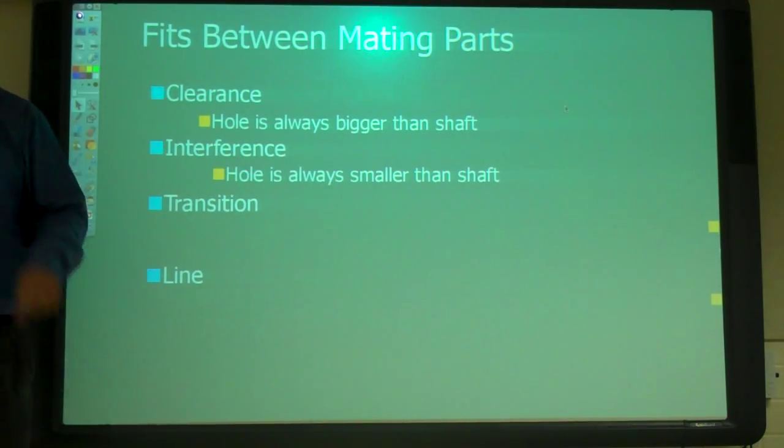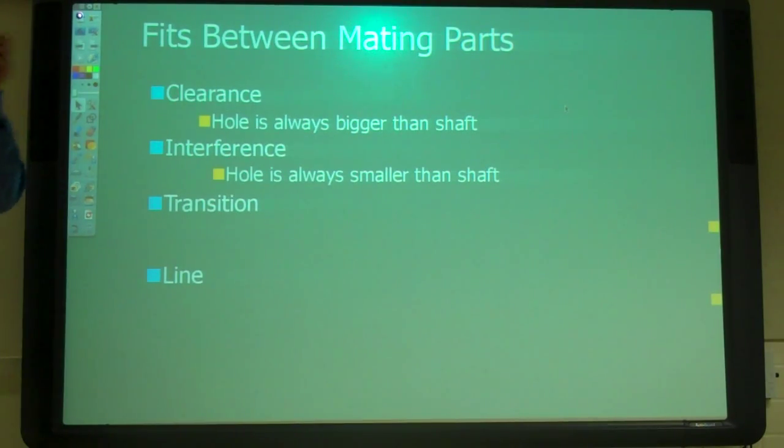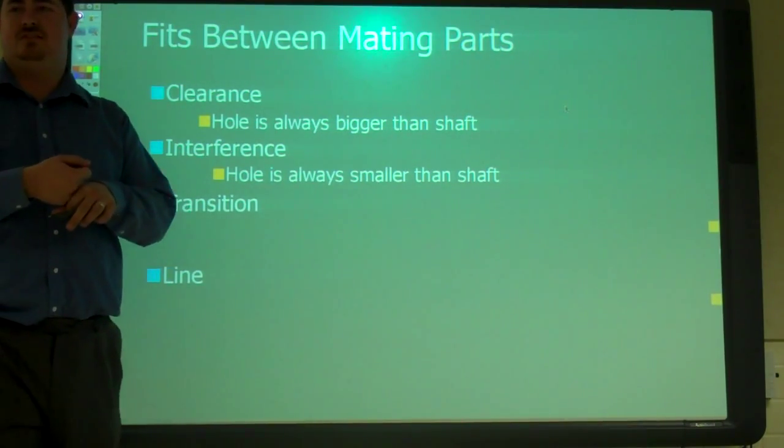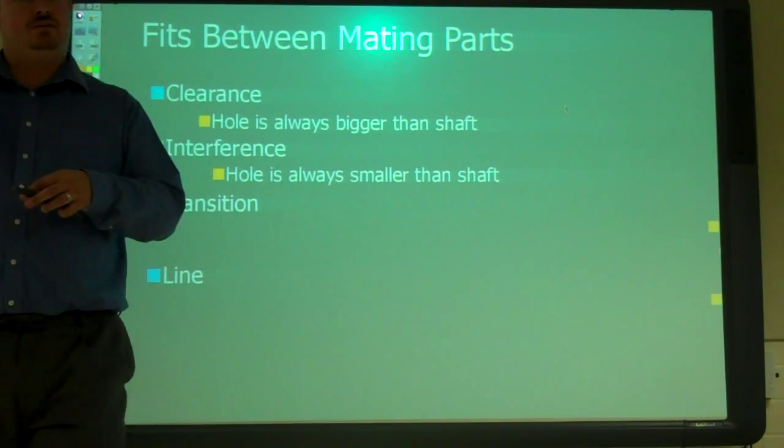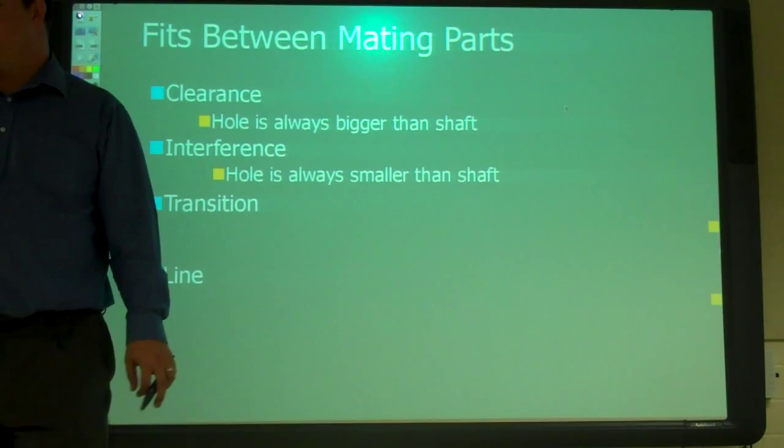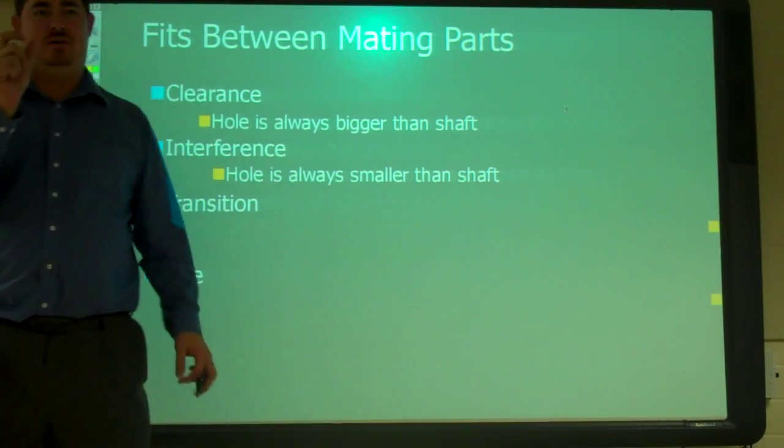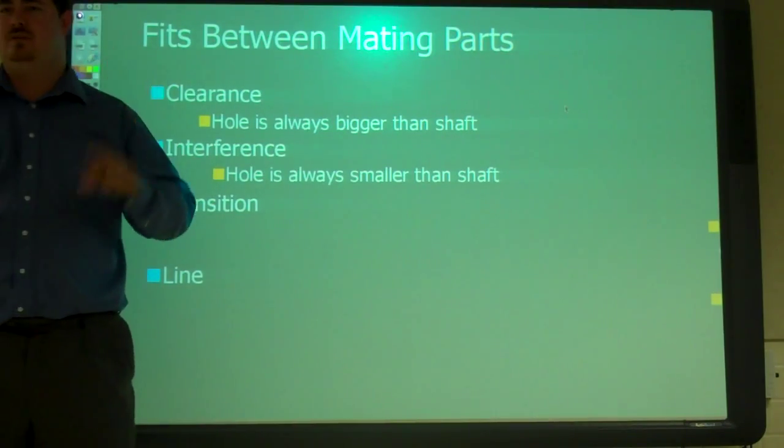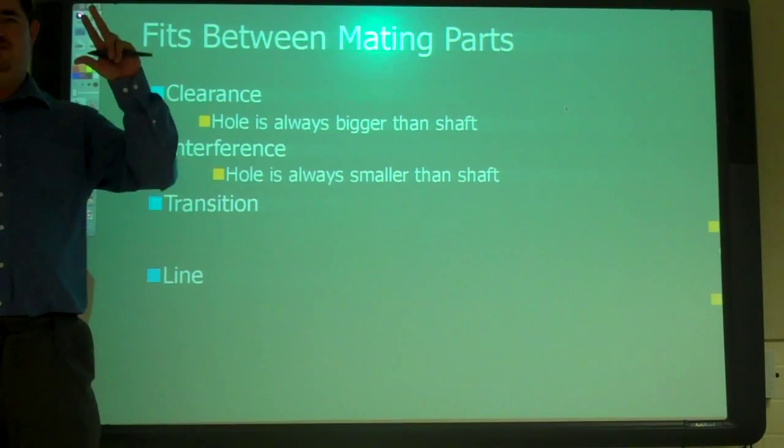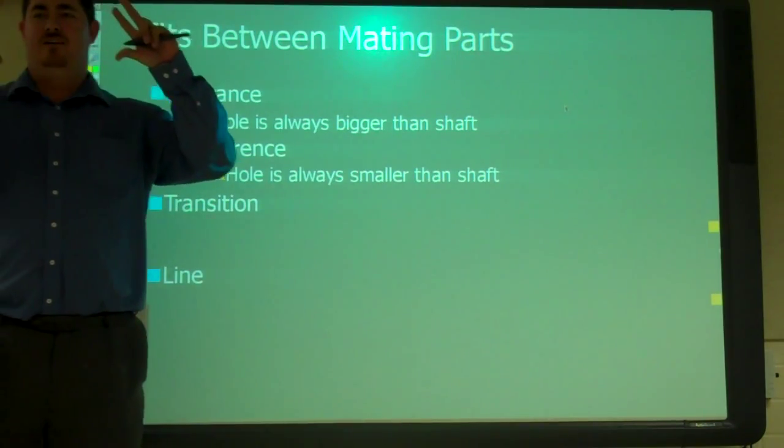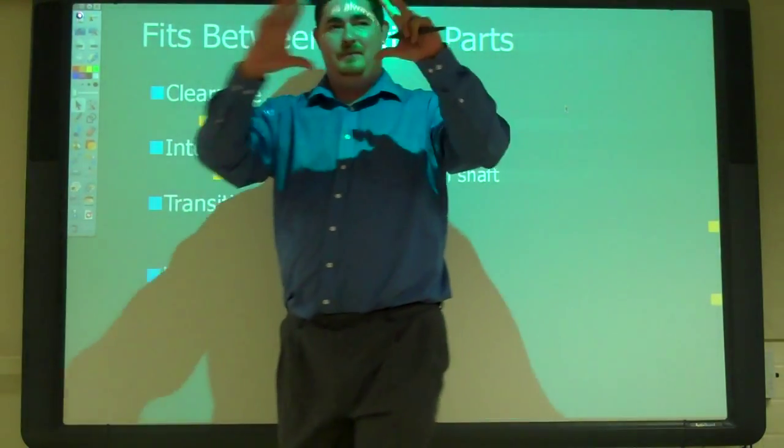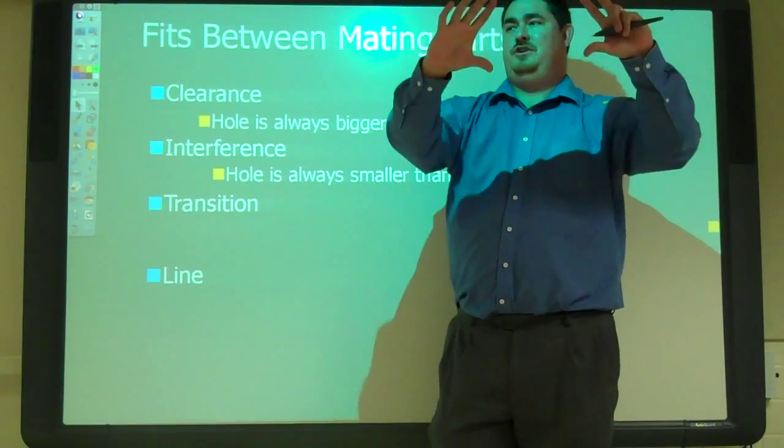Or you heat the hole up so it expands and you cool down the shaft so it shrinks and you put them together and then you return to normal temperature and they're locked together. Or you just press them together depending on how much the interference is. If the interference is only a couple thousandths you can press them together or if it's only a couple ten thousandths so we're out in the fourth or fifth decimal place you can push them together. If it's getting to a bigger interference then you have to worry about heating and stuff. So that's how they put the train tires on the train wheels.